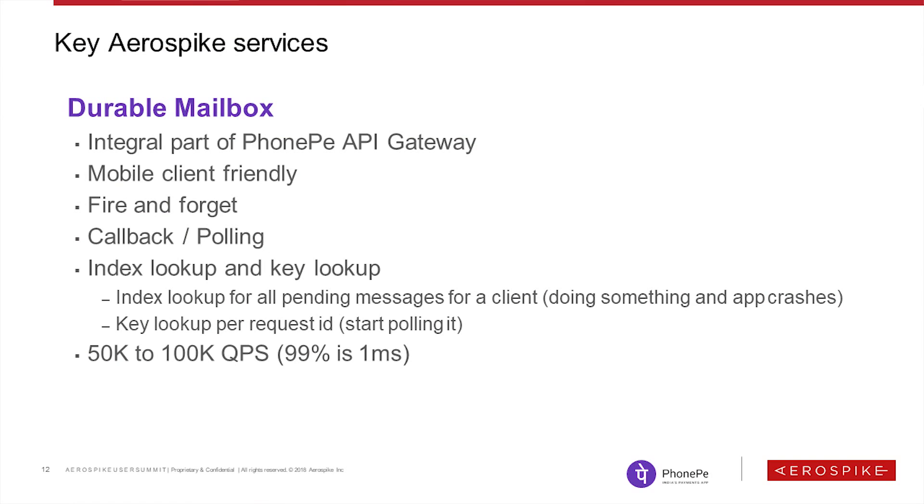One of the key services for us is what I call the durable mailbox. We are an app-only company — we don't have a website, all we have is an app on your mobile phone. How do we engage with the user? It all happens through the durable mailbox. Whenever back-end processing has run through the 40 to 50 million users and come up with things we want to engage individual users on, those messages get put in Aerospike. As the user wakes up the application, the durable mailbox pushes the message out — maybe an offer, maybe a little notification saying you have a message. It's an integral part of our API and very mobile friendly.